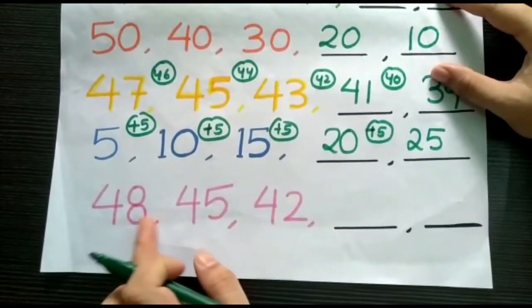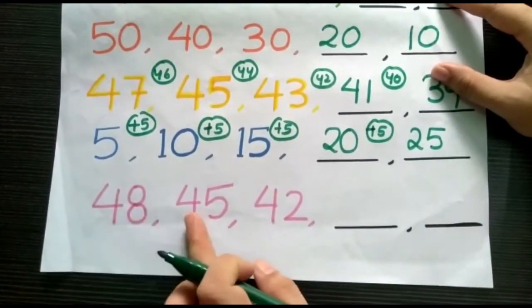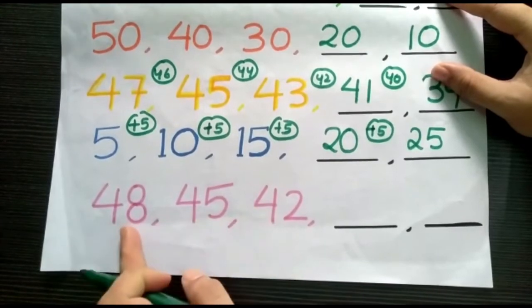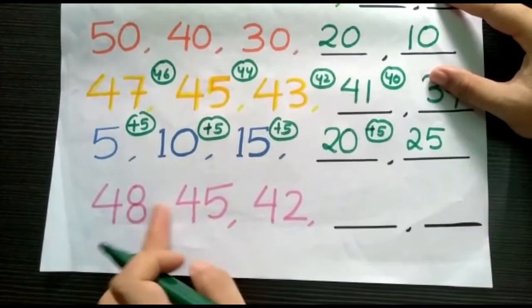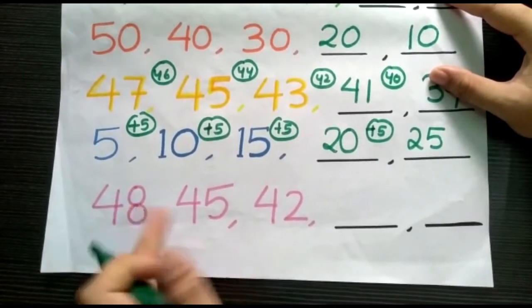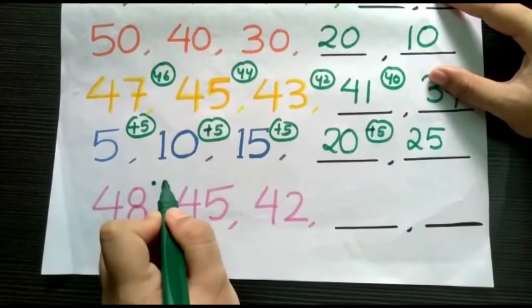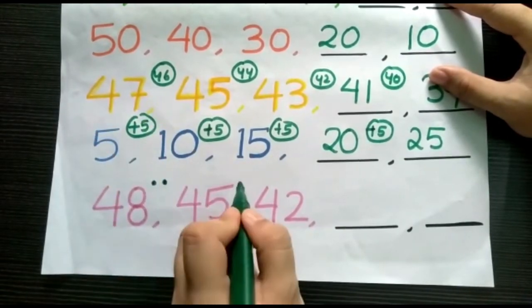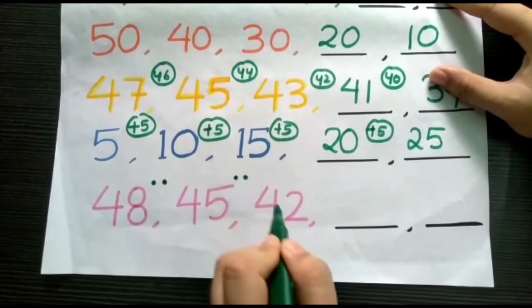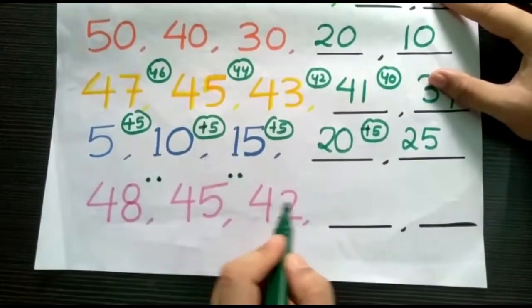Now, in the last pattern, we have 48, 45, 42. It is in a decreasing order. Let's see how many gaps we have in between. 48, 47, 46, 45. Two gaps each. After 45, 44, 43, 42. We will put two dots.